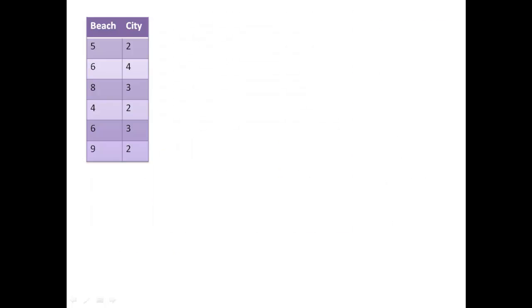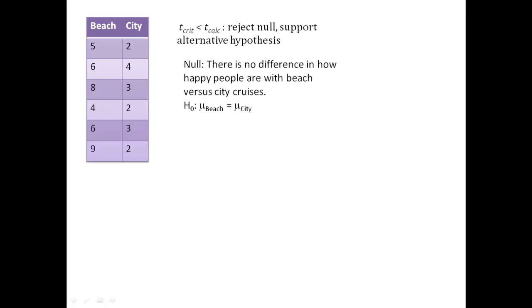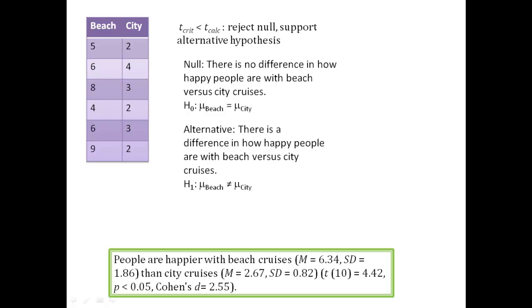We're going to go back and look at our null and alternative hypothesis. Since our t-crit is less than our t-calc, that means we reject the null and we support our alternative hypothesis. The null is that there was no difference, and the alternative is that there is a difference. That means that there is a significant difference between how much people like beach and city cruises. The way that looks when you write it up in APA style is you would say people are happier with beach cruises than city cruises, and you report the means and standard deviations and all of the statistics you calculated: T, P, and D.